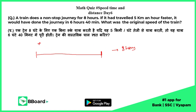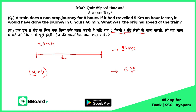If it had traveled 5 kilometers per hour faster, it means the new speed is x plus 5. The new time is 6 hours 40 minutes, and the original time is 8 hours. If I convert 6 hours 40 minutes into hours, it becomes 20 by 3 hours. The distance will remain the same in both cases.